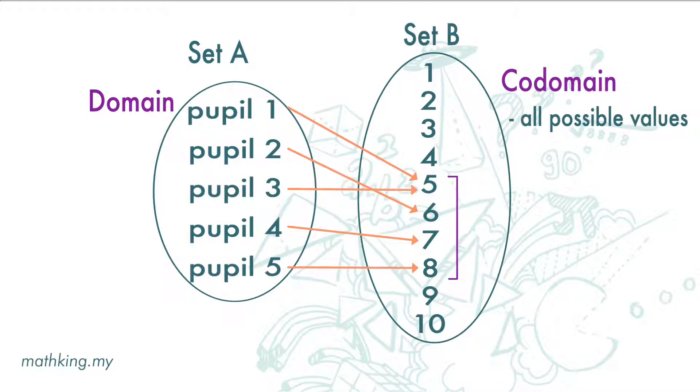5 marks to 8 marks are the images mapped by the object. It is called the range. So the range is a subset of codomain.